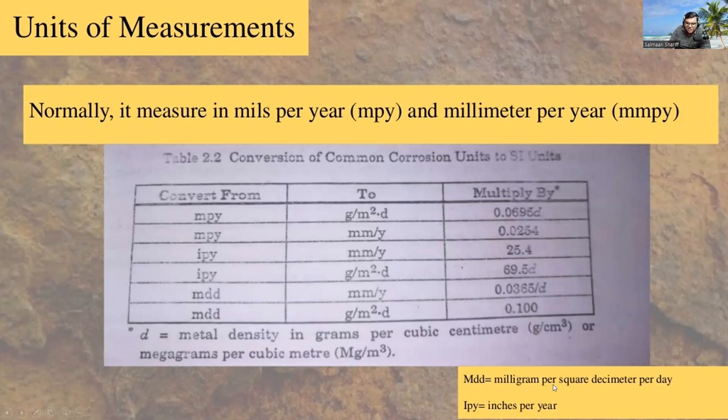MDD indicates milligram per square decimeter per day. From MDD to millimeter per year, we should multiply by 0.0365 divided by D.